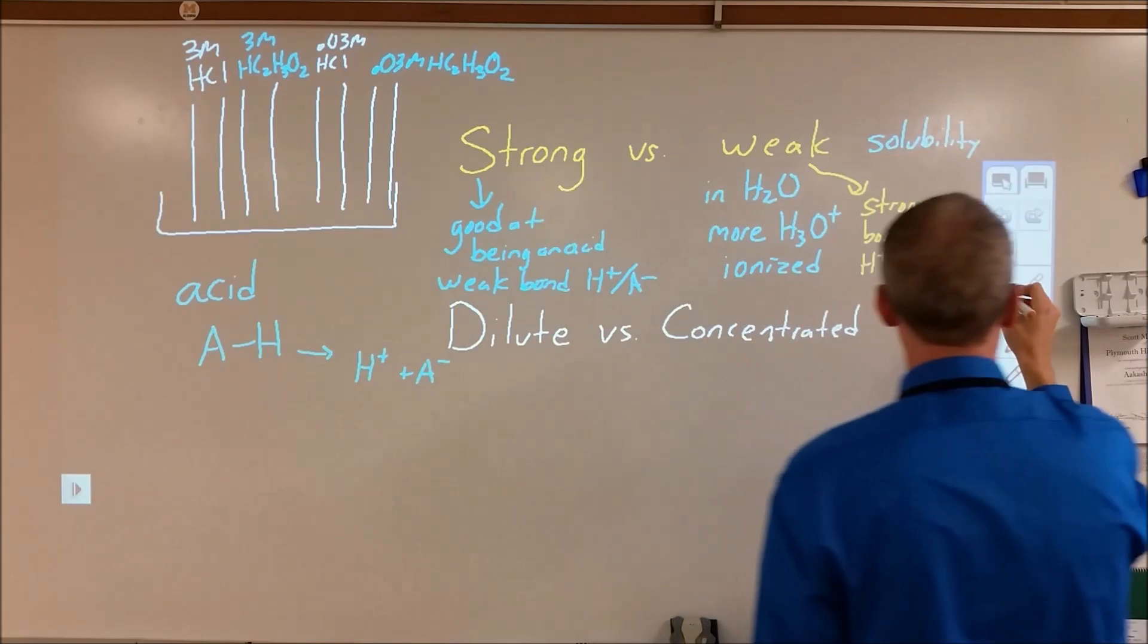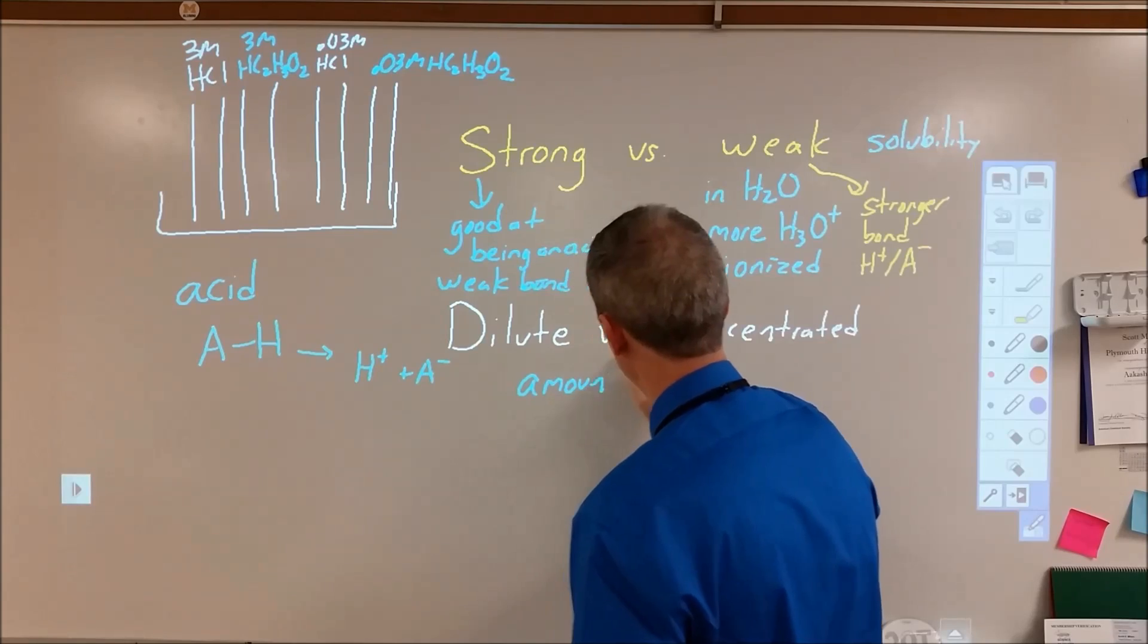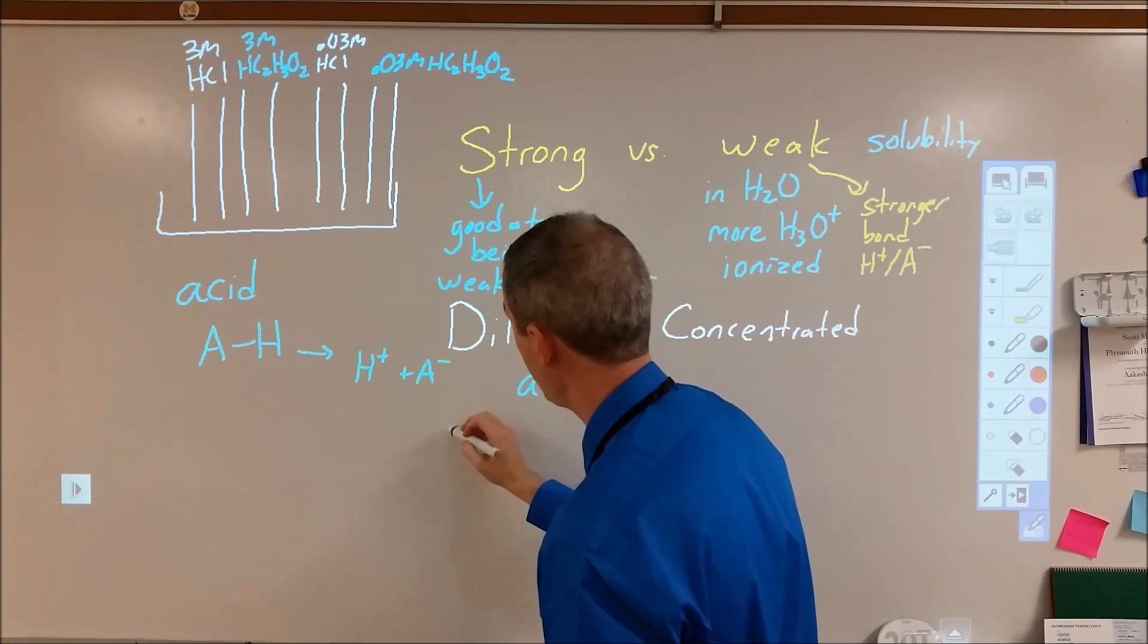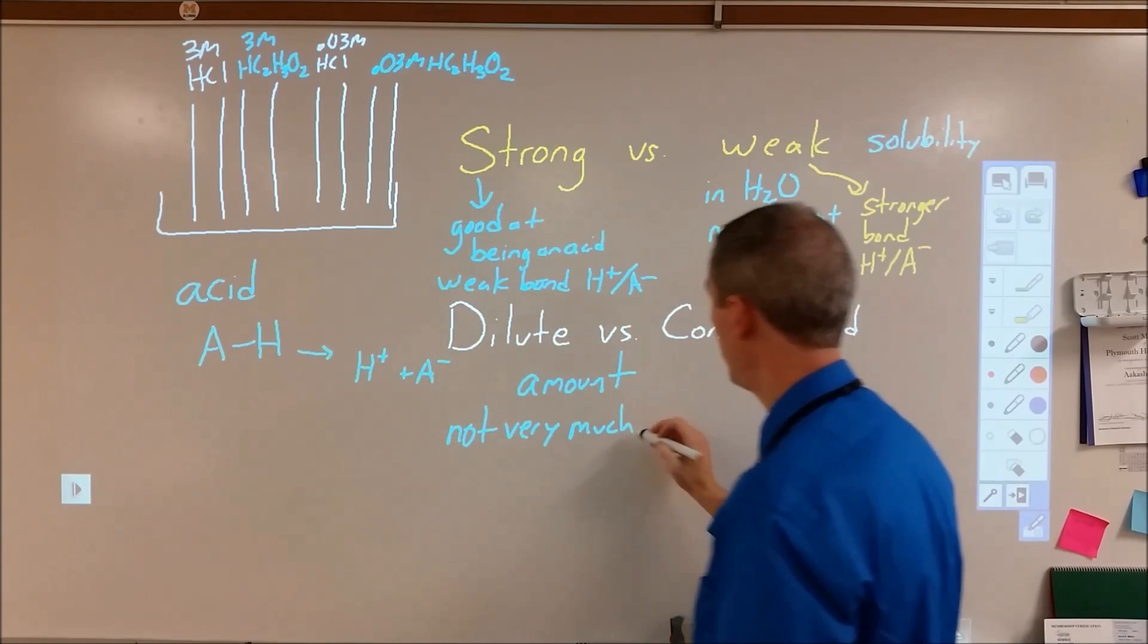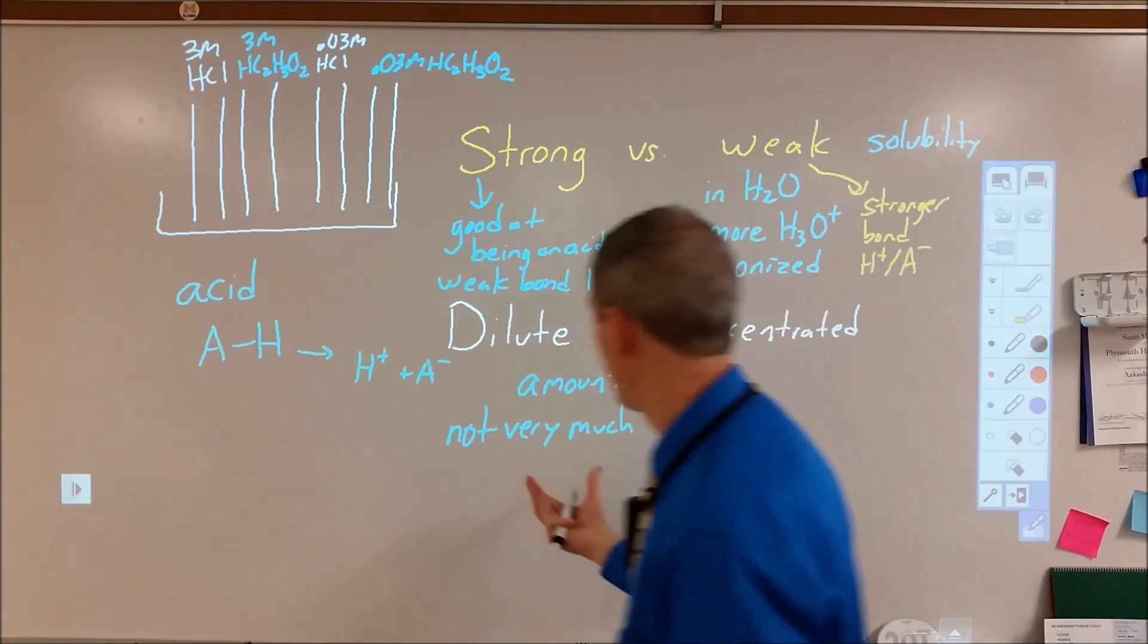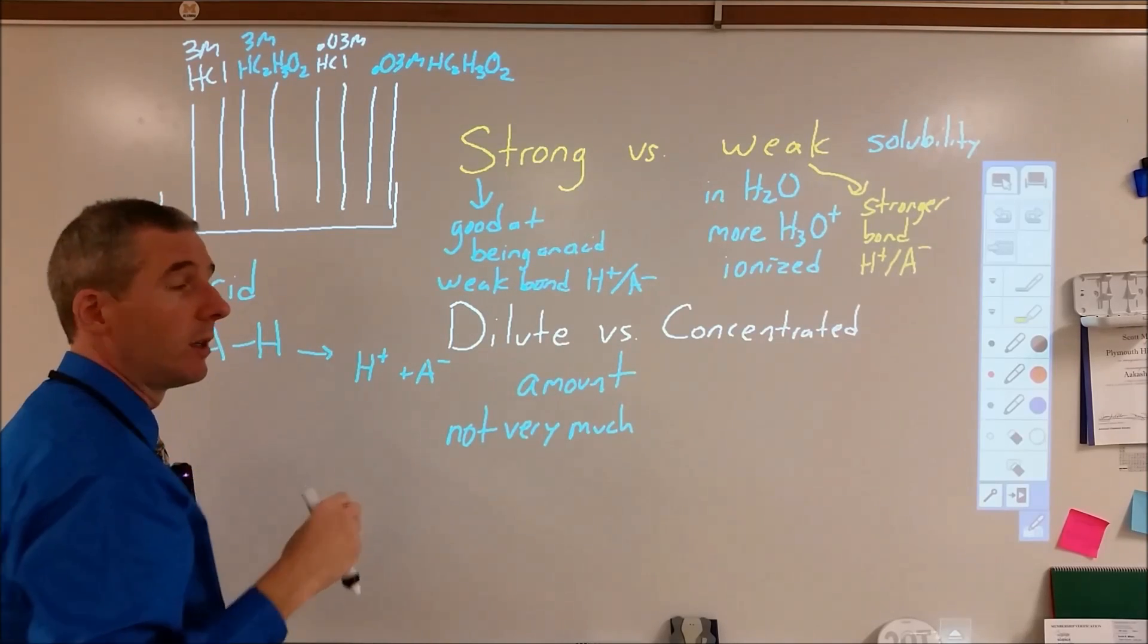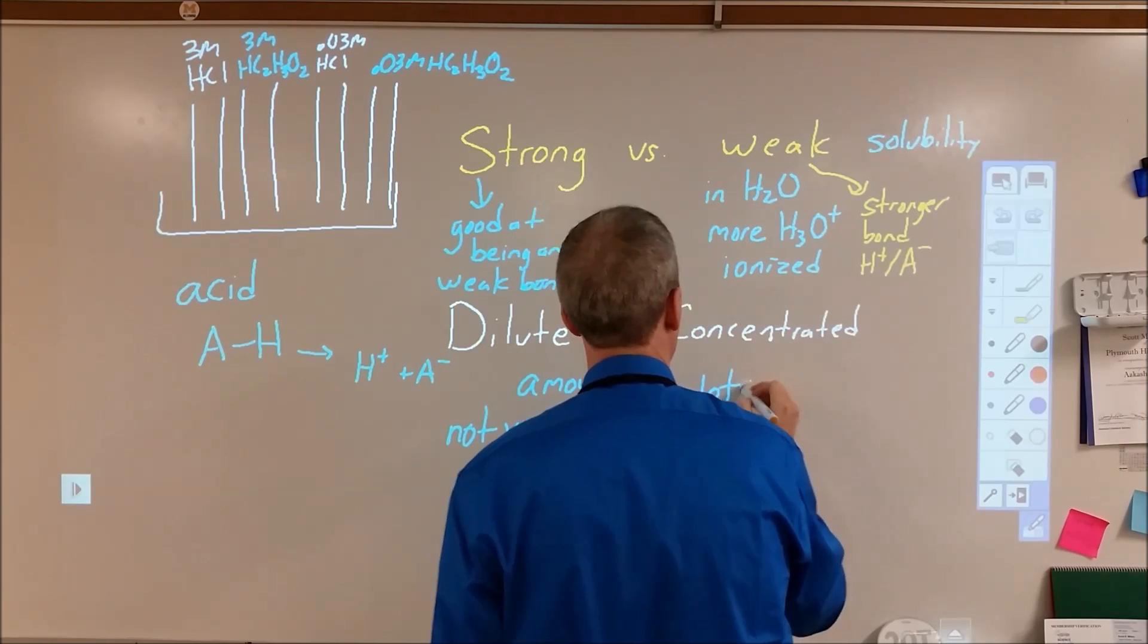Now in dilute and concentrated, here we're looking at amount. That is highly evident in this particular demonstration. When we're looking at dilute, we're looking at not very much acid in a given quantity. So we are looking at concentration, we're looking at the amount of acid compared to the amount of solution, but essentially dilute means there's not very much. There's not very much strong acid, there's not very much weak acid. Now in both of these cases, what's interesting, and concentrated of course would be lots of weak acid.